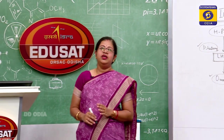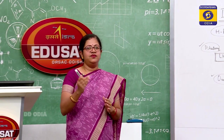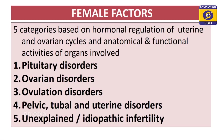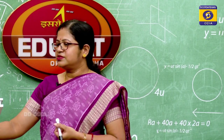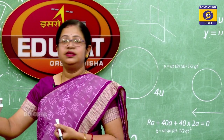The five major categories of female infertility factors are: pituitary disorders, ovarian disorders, ovulation disorders, pelvic/tubal/uterine disorders, and unexplained or idiopathic disorders. Let us discuss all of these in detail.